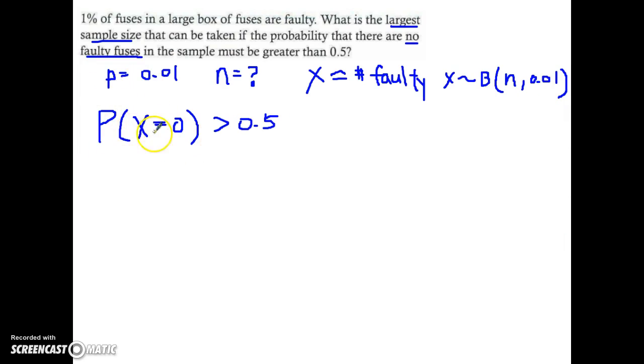So this is a bit easier. The probability for random variable x equals to 0, I will have n choose 0, the probability of success which is 0.01, in other words the probability of faulty, that's what we are interested in, to the power of 0.